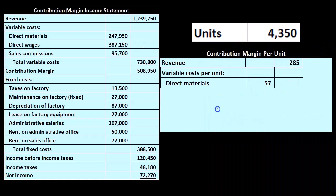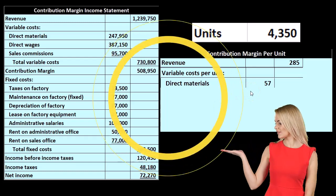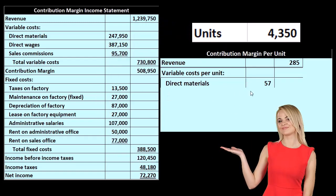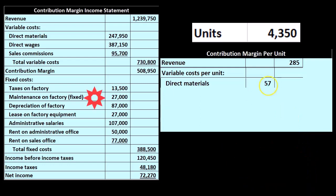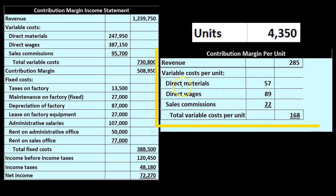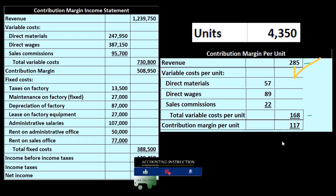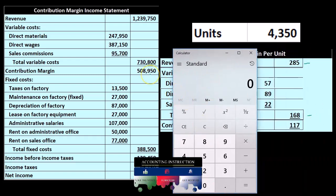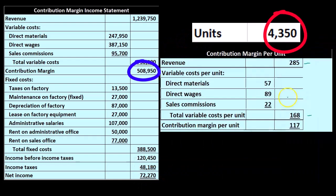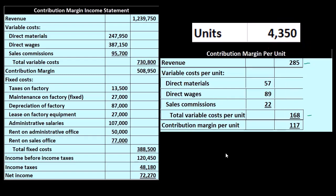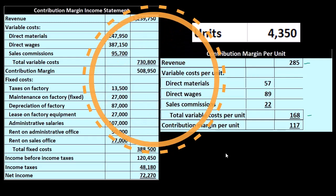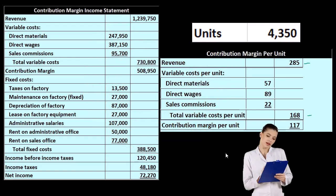We break these costs out by behavior — variable and fixed. Direct wages and sales-related items also behave the same way, giving us our total variable costs per unit. Sales minus total variable costs gives us our contribution margin per unit, which we can also calculate as the contribution margin total divided by the number of units, 4,350. This is a useful number for projection purposes. Some assumptions are made for cost-volume-profit analysis, and we'll talk about those, but note that this is a useful tool.